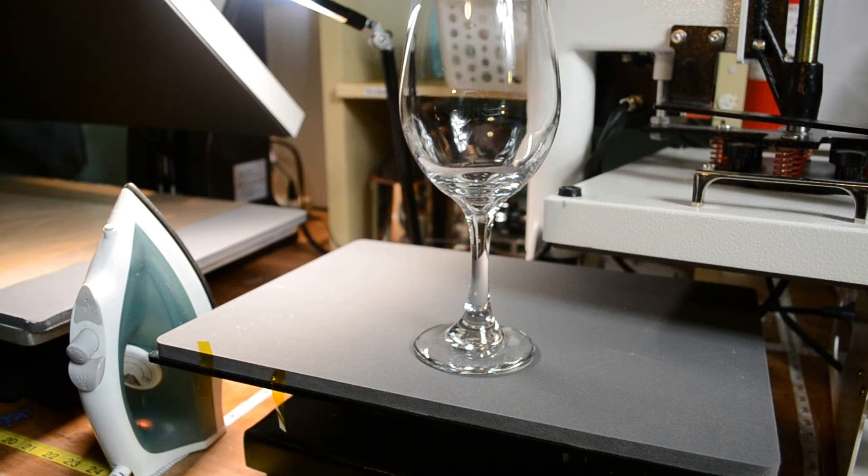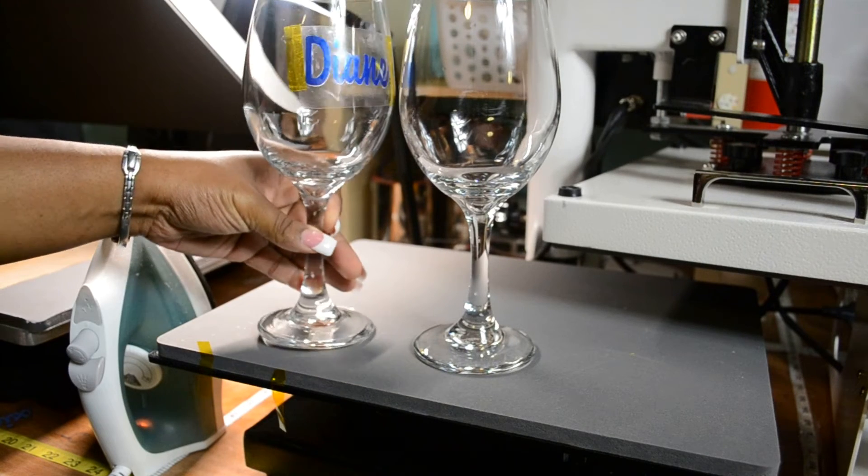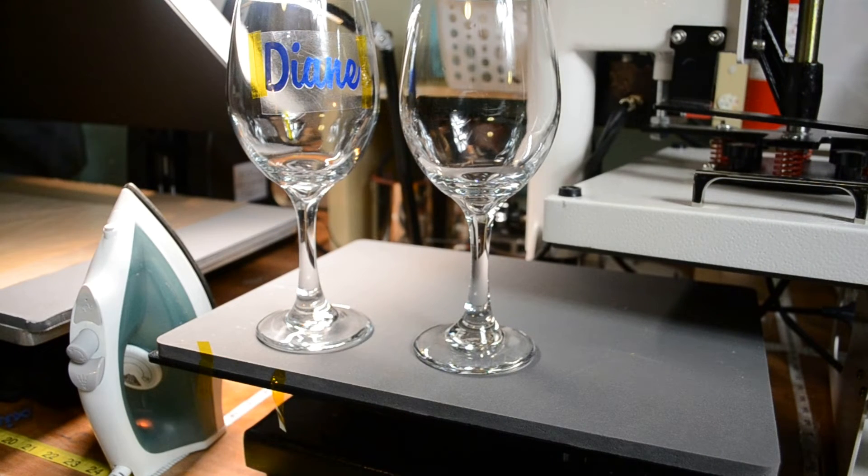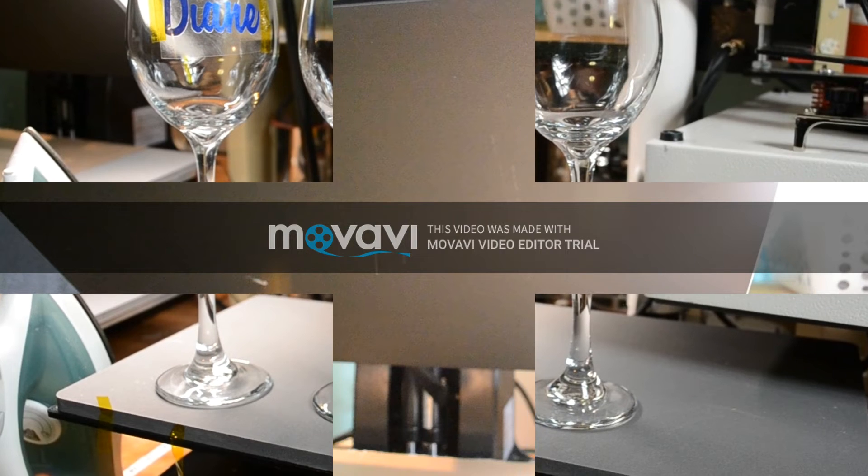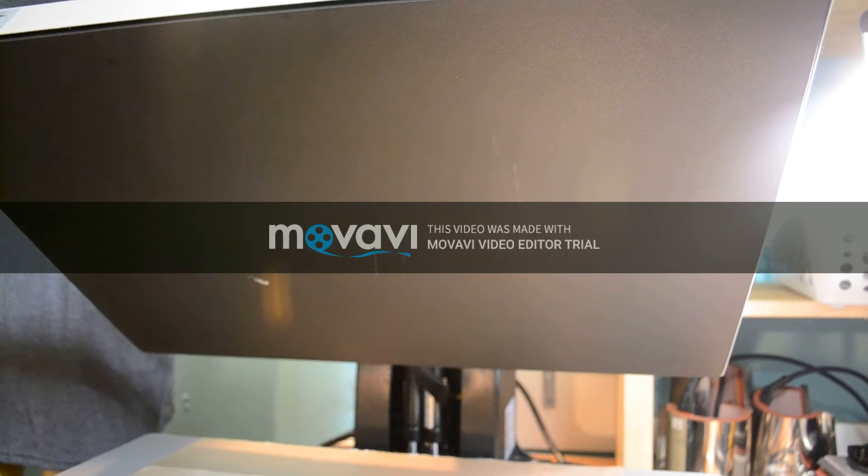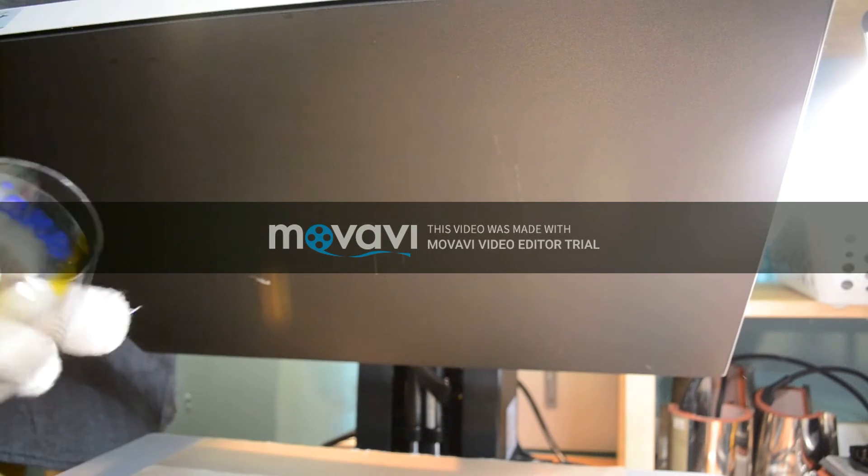And I'll show you what I'm doing. I'll move the camera so you can see exactly what I took it over to the heat press to do. Okay. And so, after applying this to the iron, let me just see if I can get a closer look so you can see exactly what I'm doing.